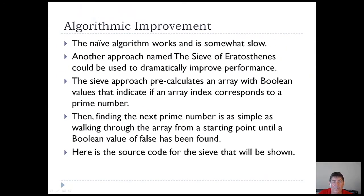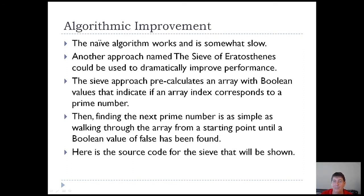There is a way to improve this naive algorithm, and that's with an approach called the Sieve of Eratosthenes. With the Sieve of Eratosthenes, what we do is we pre-calculate a whole bunch of prime numbers. We fill in an array with the potential prime numbers — everything is pre-calculated. Then once it comes time to find the next prime number, we sort of walk down a Boolean array.